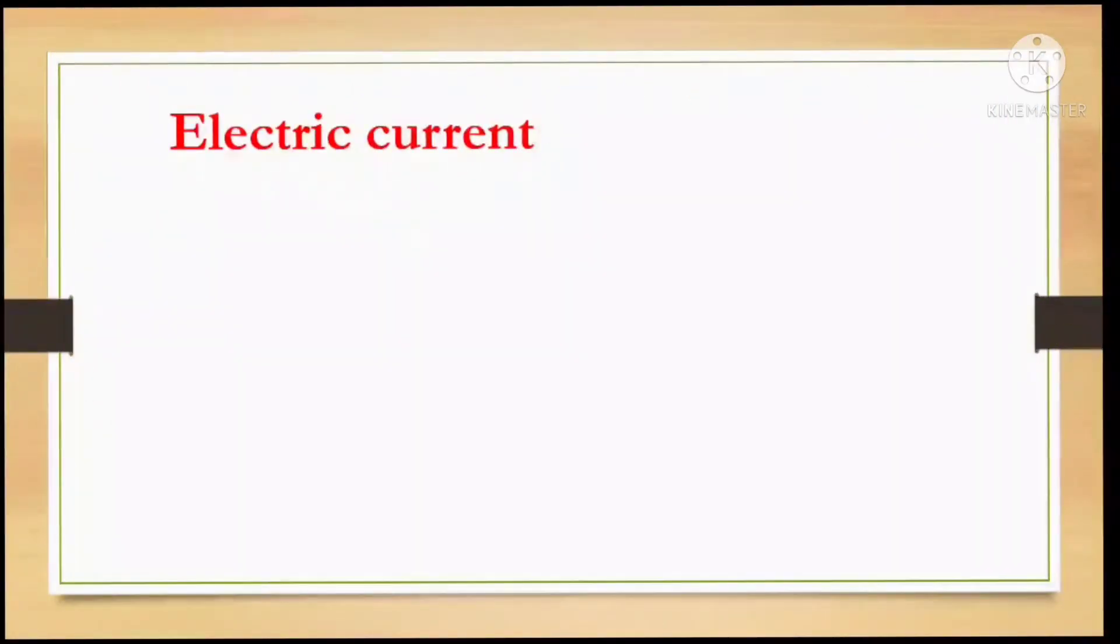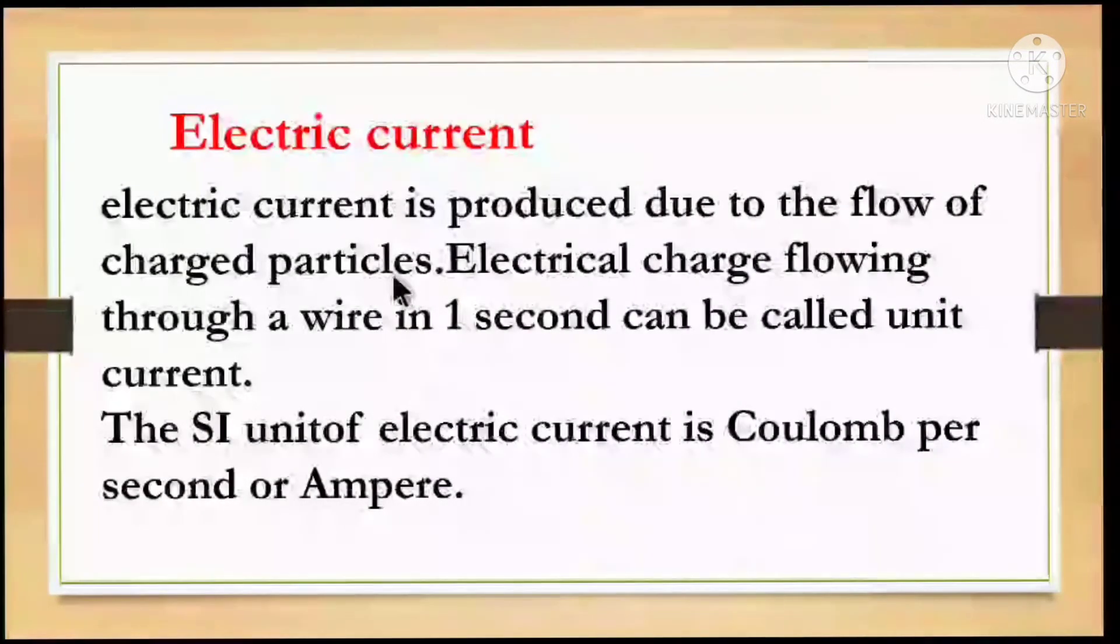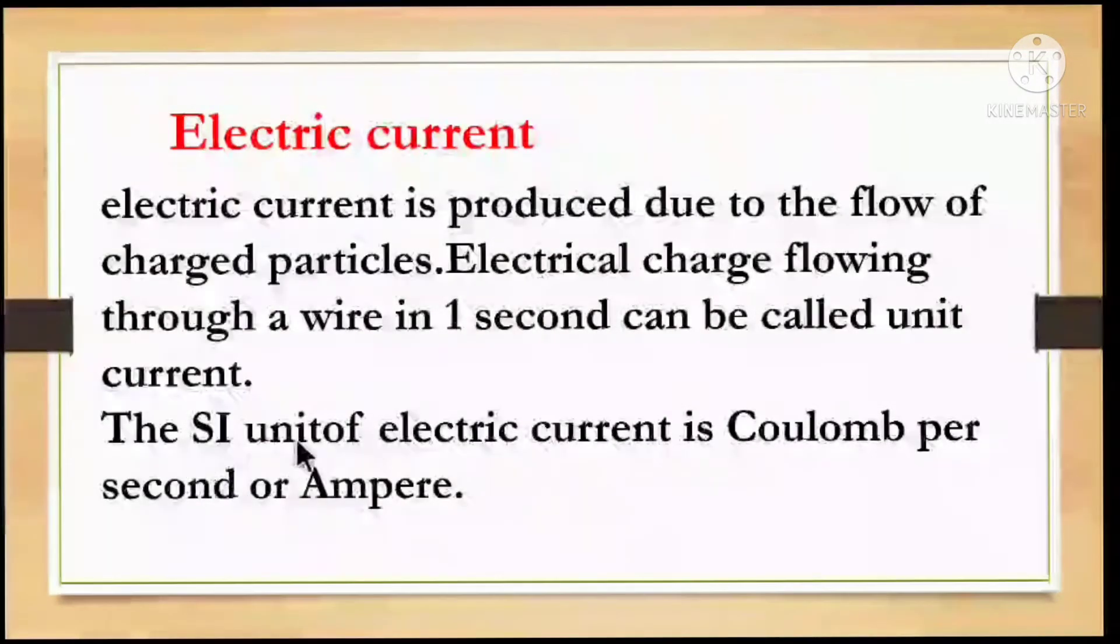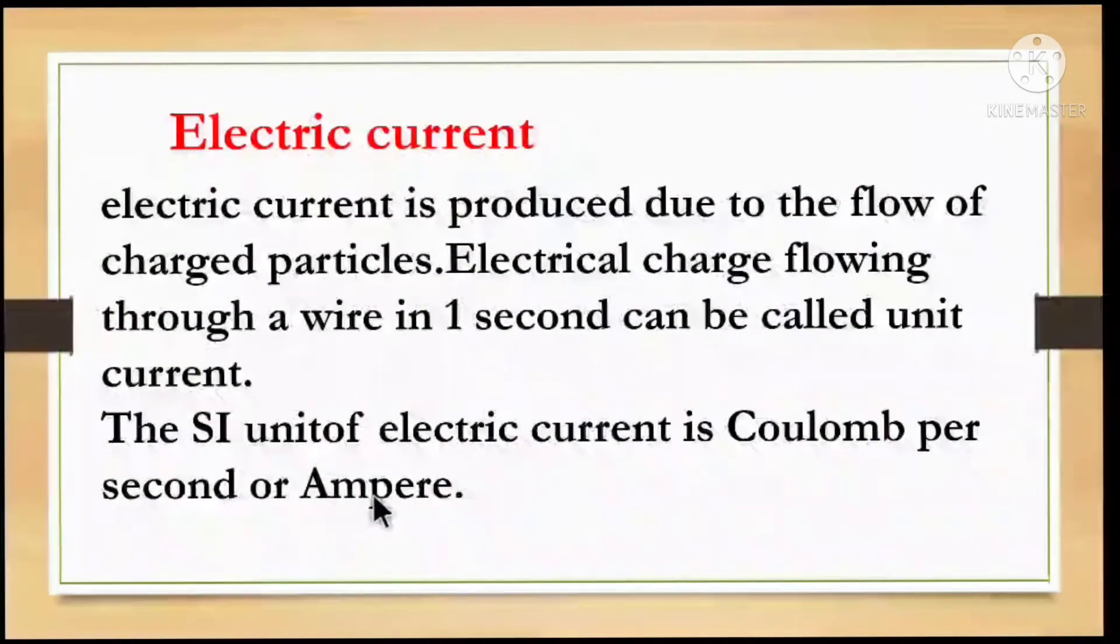Electric current is produced due to the flow of charged particles. Electrical charge flowing through a wire in one second can be called unit current. The SI unit of electric current is Coulomb per second or Ampere.